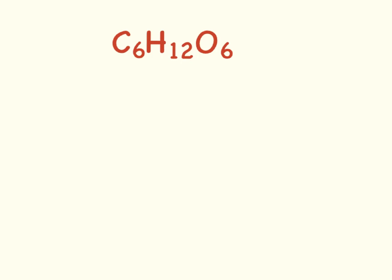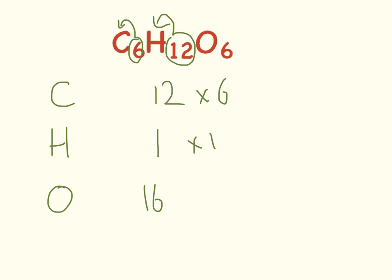So getting a bit more complicated now. This is actually glucose. So we have carbon, hydrogen and oxygen. The mass of carbon is 12. The mass of hydrogen is 1. The mass of oxygen is 16. Now we have 6 carbons, we have 12 hydrogens and we have 6 oxygens.